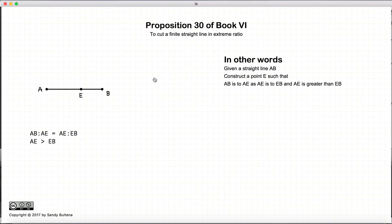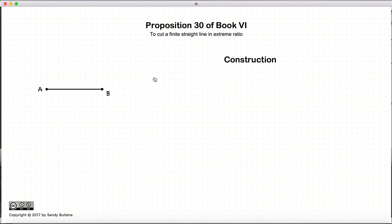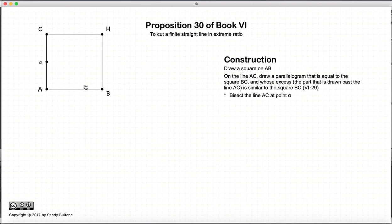So how are we going to do that? The first thing we're going to do is construct a square on AB. The next thing we're going to use is all the methods of Proposition 29 of this book, and we are going to draw a parallelogram that is equal in area to CB that extends past the line AB, and whatever passes by the line AB will be similar to a square, or in other words it will be a square.